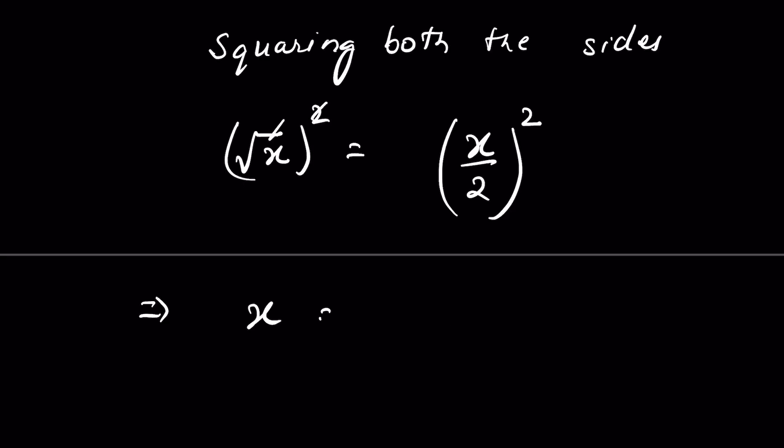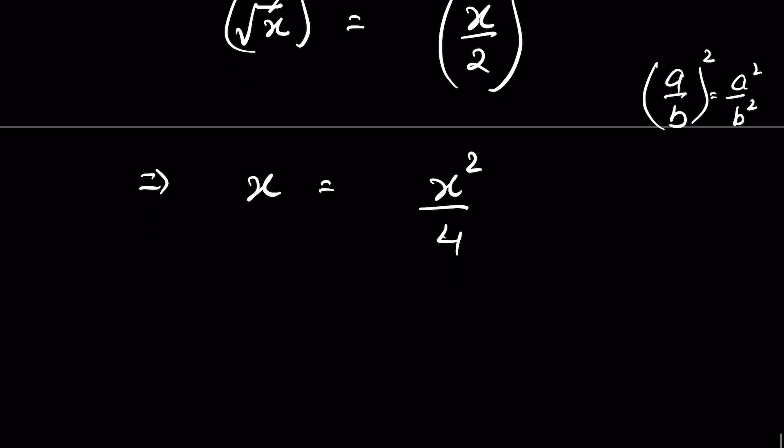So x equals x squared over 4, because when a over b is whole squared, it equals a squared over b squared. So x squared over 4, or we cross multiply it.